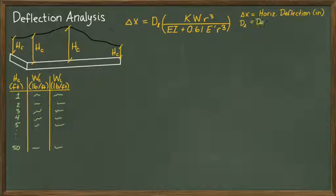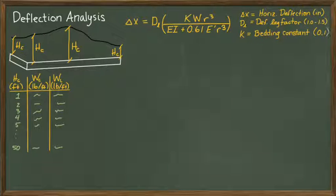D sub l is the deflection lag factor, which ranges from 1 to 1.5. K is the bedding constant, which is typically specified as 0.1.